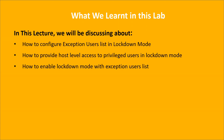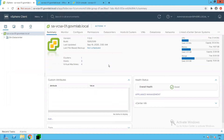We will also discuss how to provide host-level access to privileged users in lockdown mode, and how to enable lockdown mode with the exception user list and validate the DCUI and host client level access. As you can see, we are logged into our vCenter Server SA-VCSA01, and we have a data center named SA Data Center in the vCenter inventory.